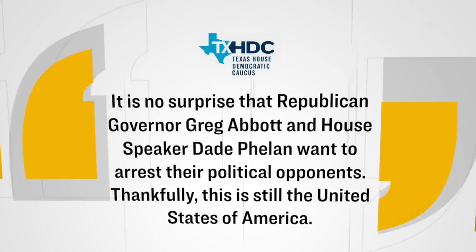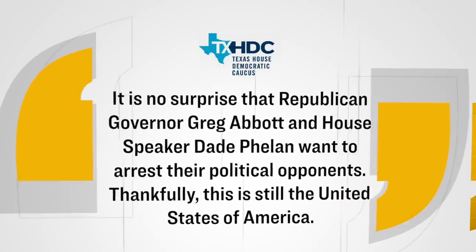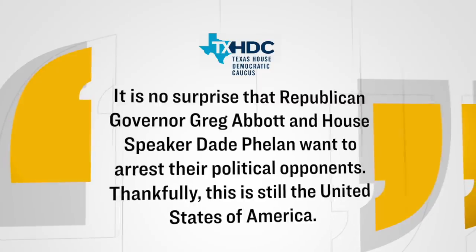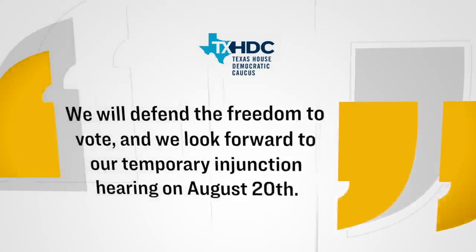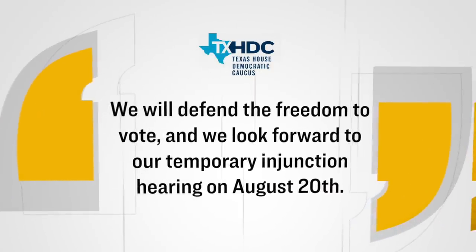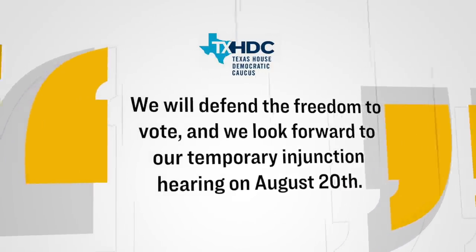On the flip side, House Democrats released an opposing statement decrying this decision. Here's what part of that said. It is no surprise that Republican Governor Greg Abbott and House Speaker Dade Felon wanted to arrest their political opponents. Thankfully, this is still the United States of America. We will defend the freedom to vote and we look forward to our temporary injunction hearing on August the 20th. Regardless, the arrest warrants are now being issued to the lawmakers' offices. And so, we'll just have to wait and see what happens. Although, according to local media reports, some Democrat lawmakers have started to return back to Texas. And thus far, it's unclear whether any of them have either been arrested or detained.